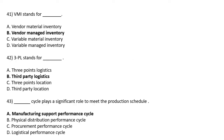VMI stands for — Option A: Vendor Material Inventory, Option B: Vendor Managed Inventory, Option C: Wearable Material Inventory, Option D: Wearable Managed Inventory. The correct answer is Option B: Vendor Managed Inventory.